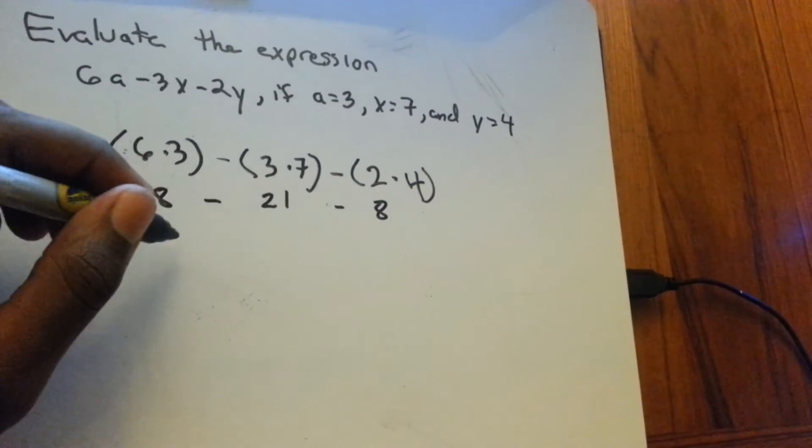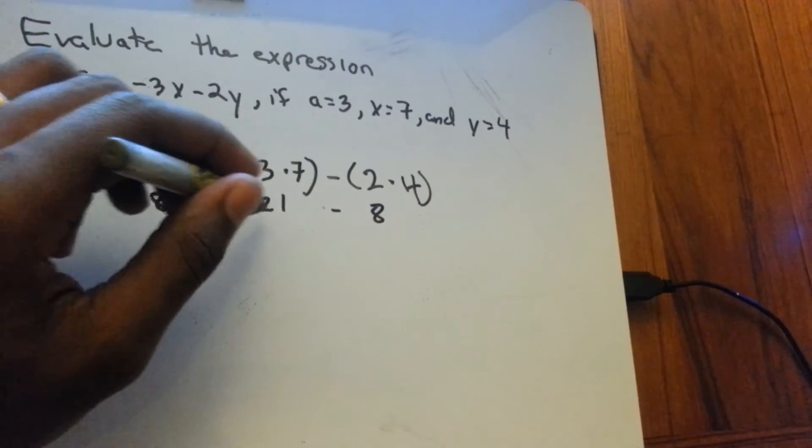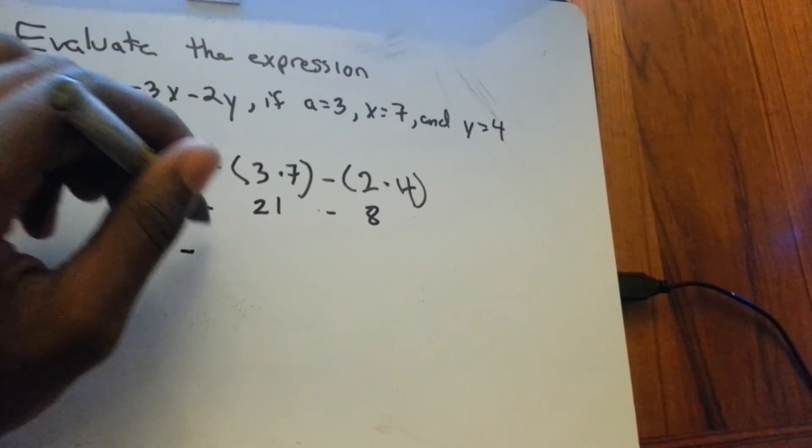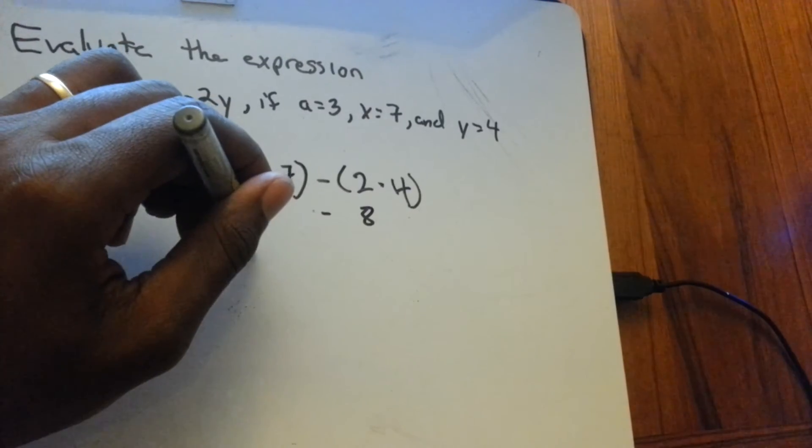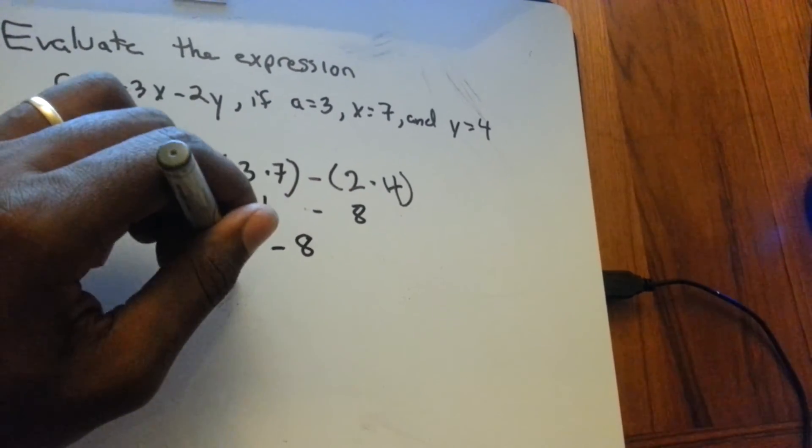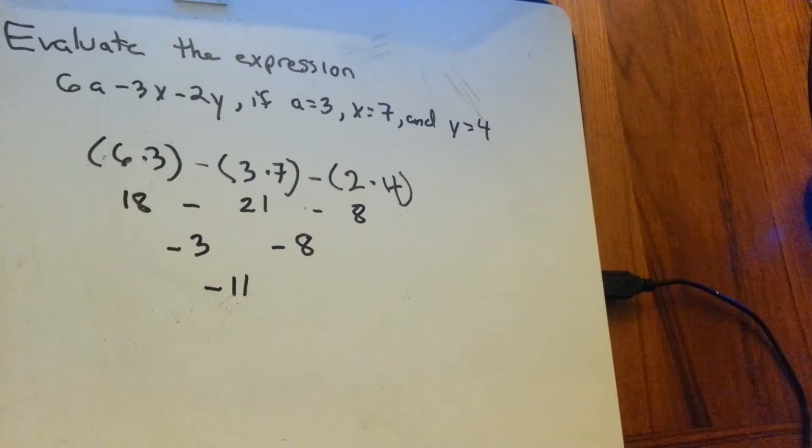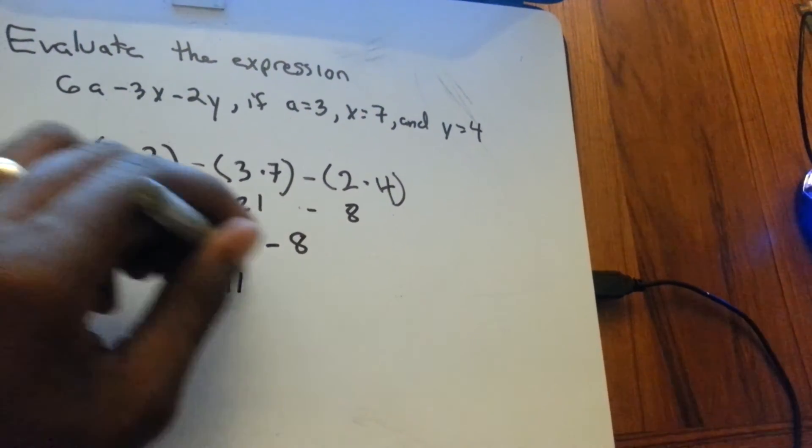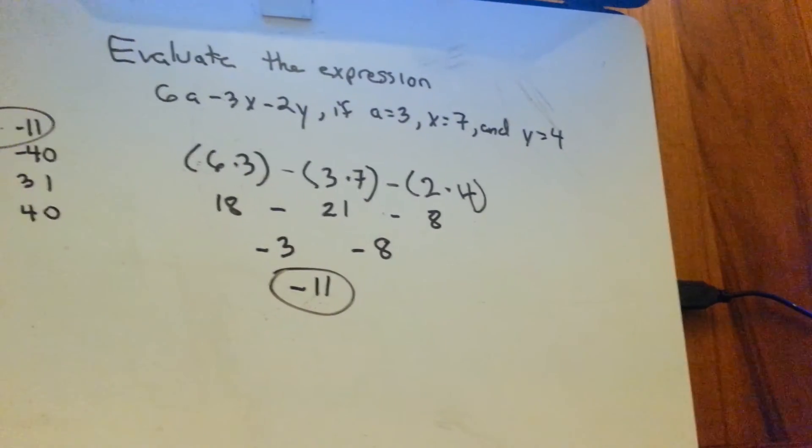And then just go through. 18 minus 21 is negative 3, minus 8 is negative 11. Answer A. And there you go.